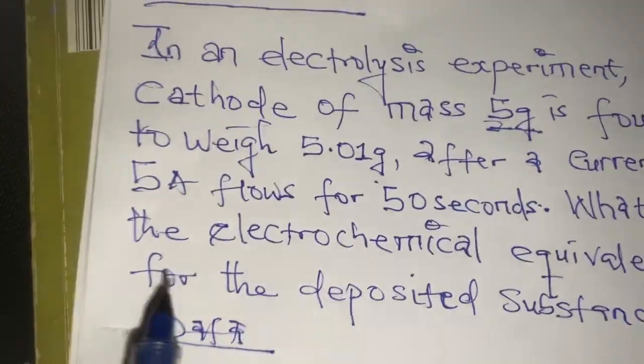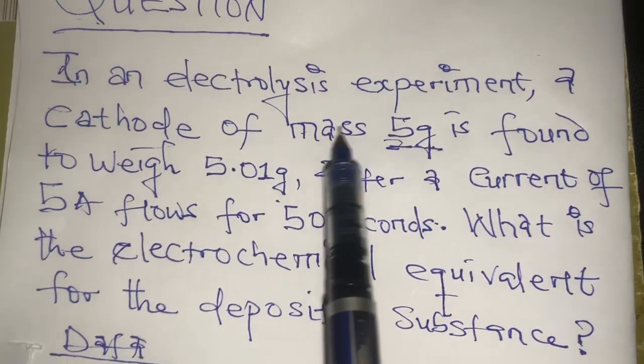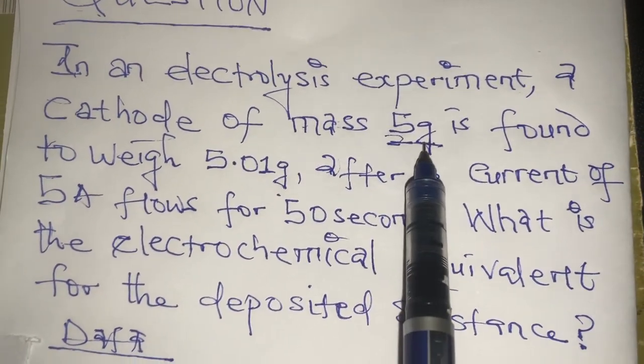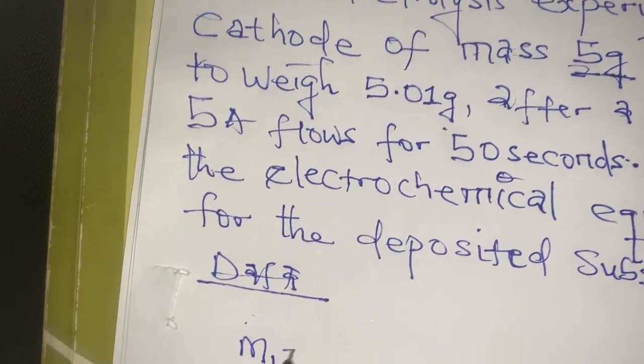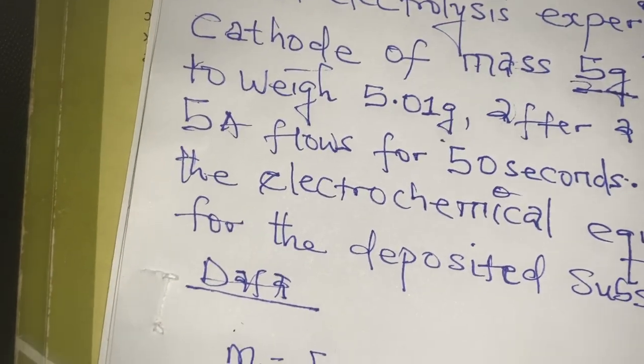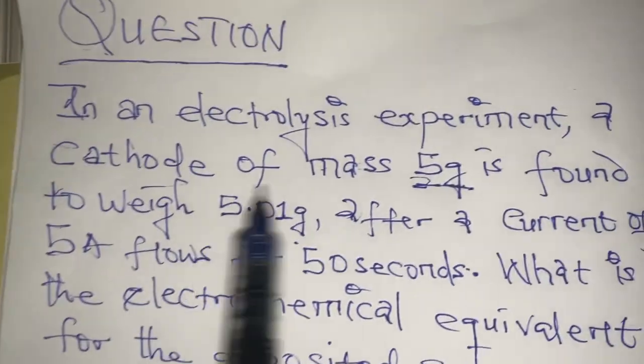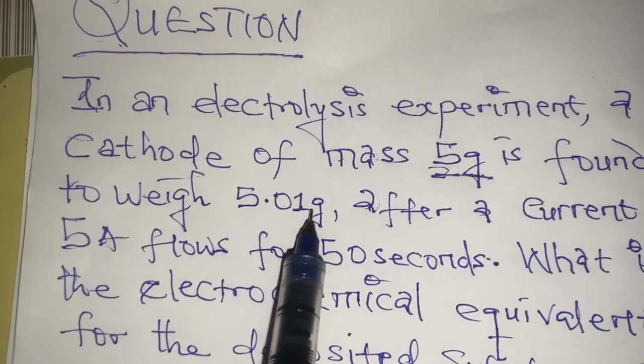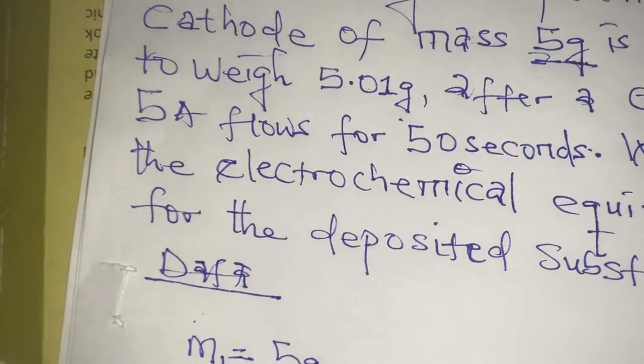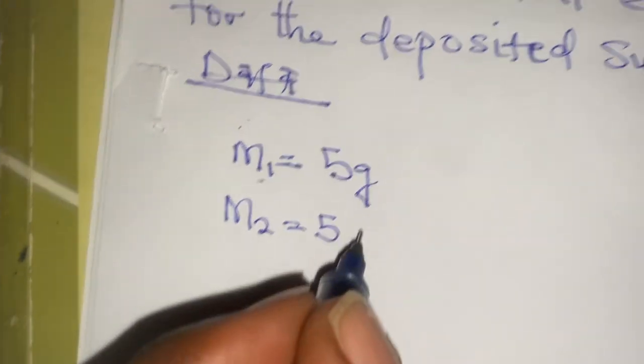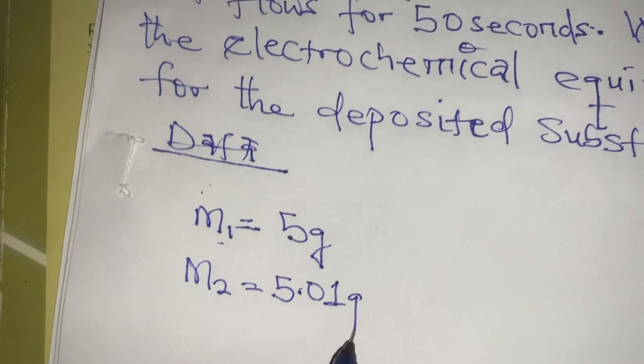Now, we need to find our data. To extract our data, we'll see that the mass here is 5 grams. Therefore, we have M1 equals to 5 grams. It's found to weigh 5.01 grams. Therefore, M2 is equal to 5.01 grams.